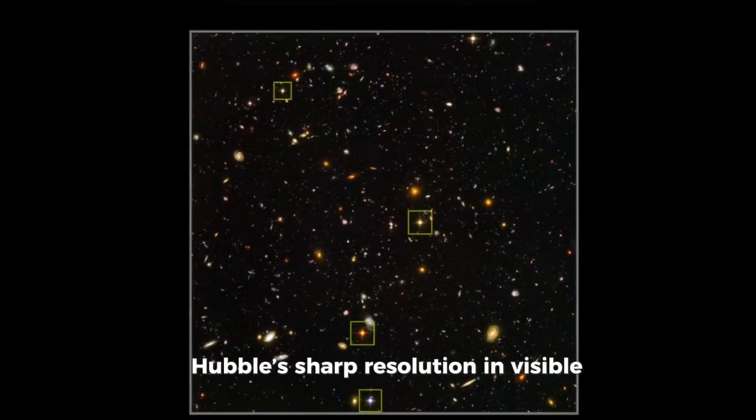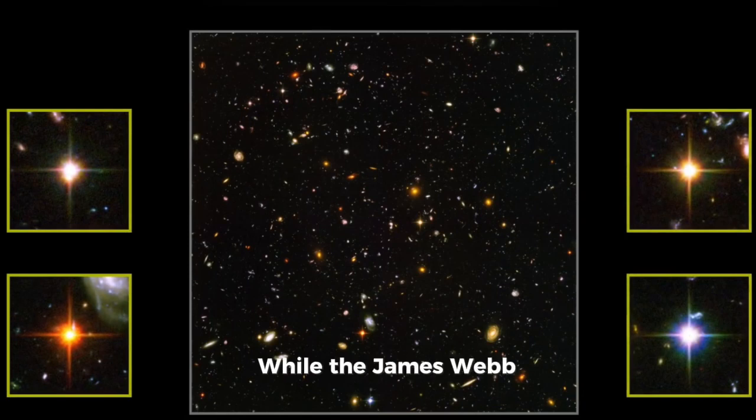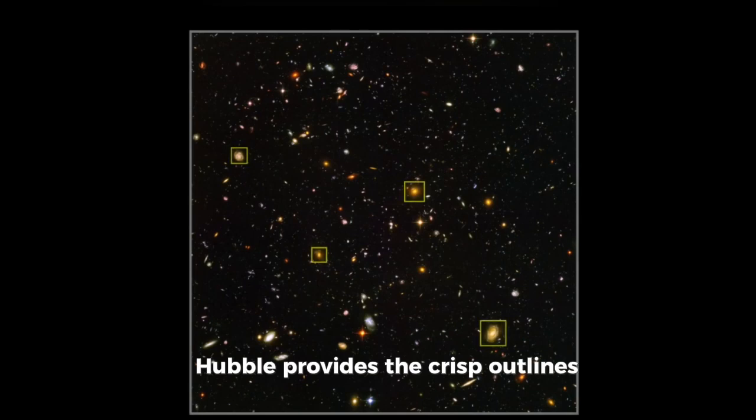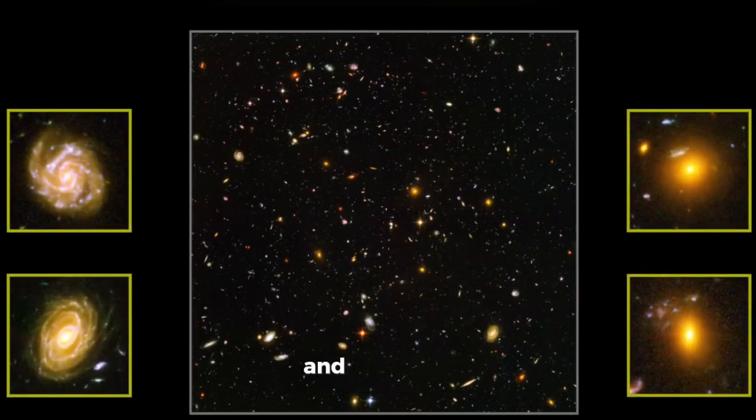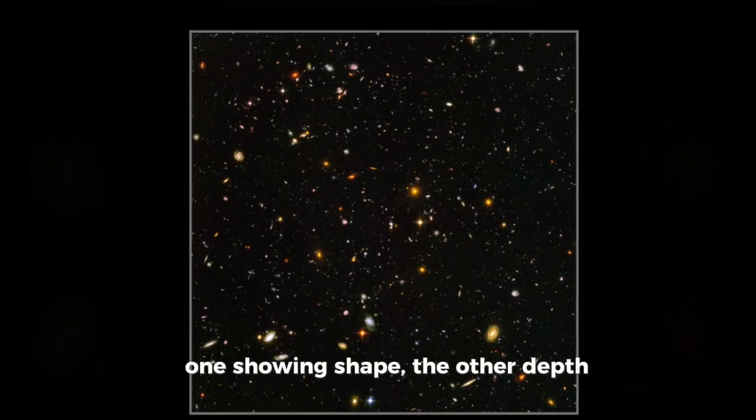Hubble's sharp resolution in visible wavelengths is another unmatched asset. While the James Webb Space Telescope reveals dust-shrouded regions in the infrared, Hubble provides the crisp outlines of those same structures. When scientists combine the two, they get both the skeleton and the soul of star-forming regions—one showing shape, the other depth.